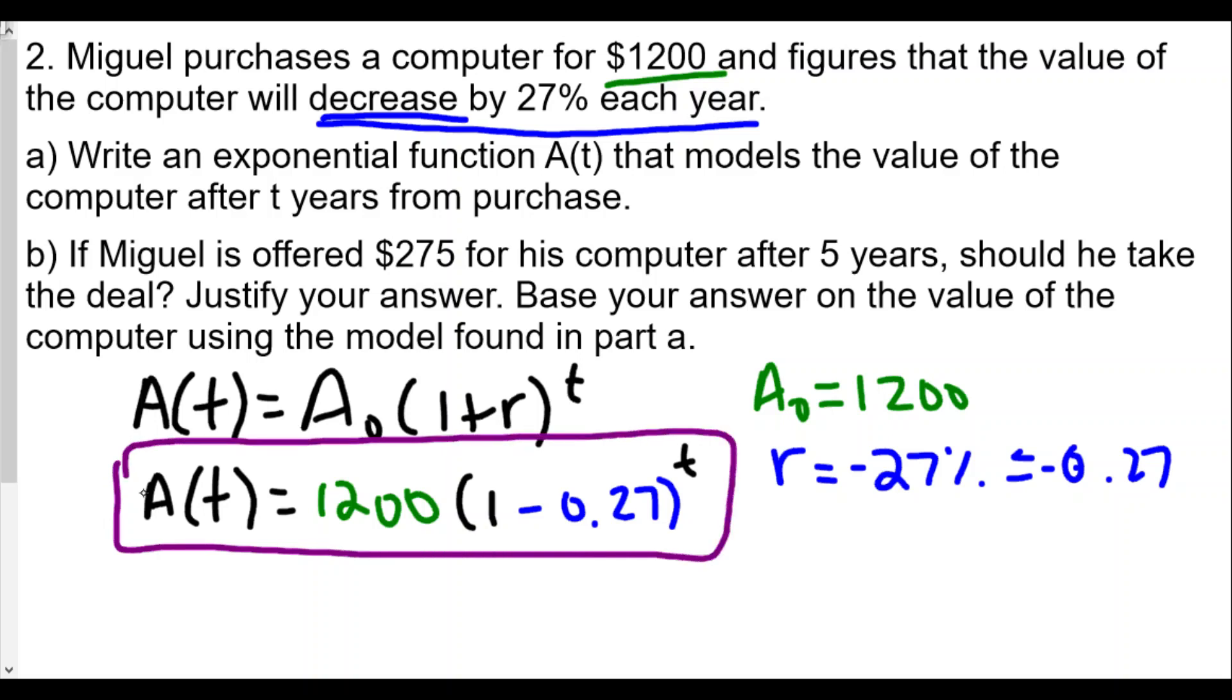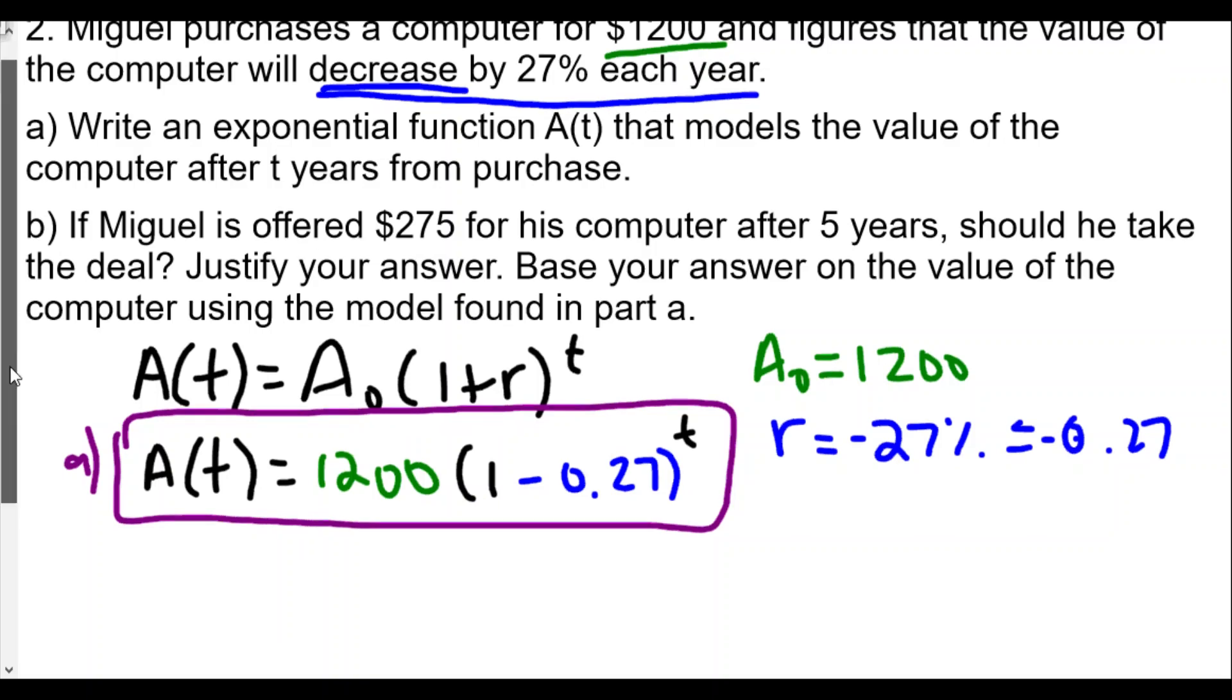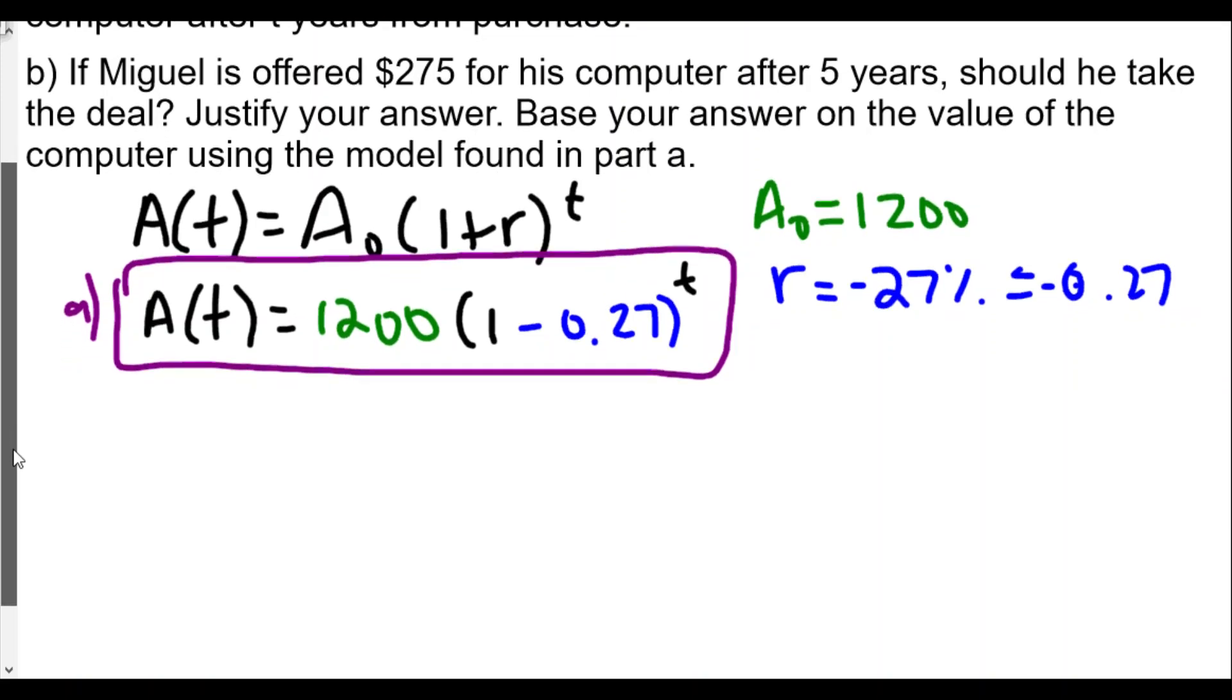For part b, it's five years. Miguel has had the computer five years now and wants to consider selling it. He's offered $275 for his computer. He paid $1,200 for it, but that was five years ago. One of the things about technology is unfortunately over time most technology goes down in value, so we want to figure out what is the value after five years.